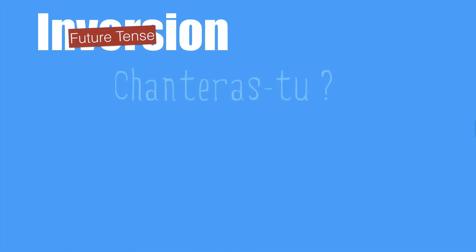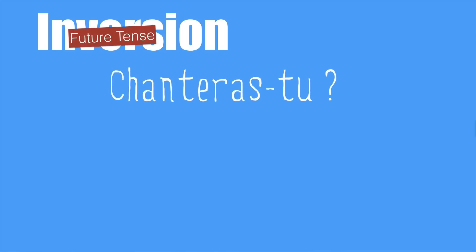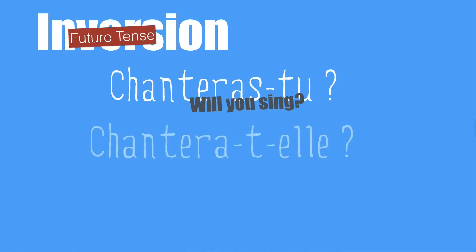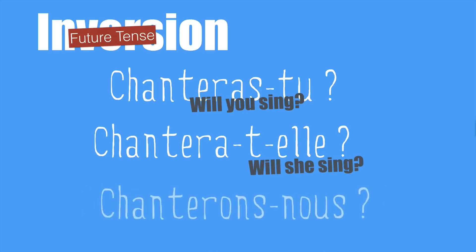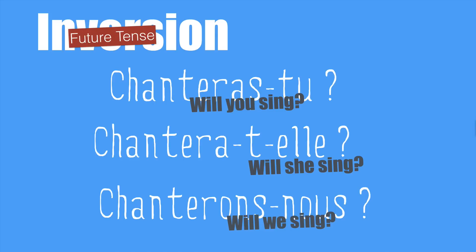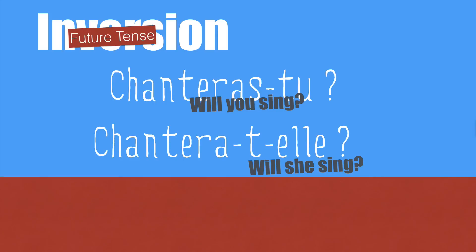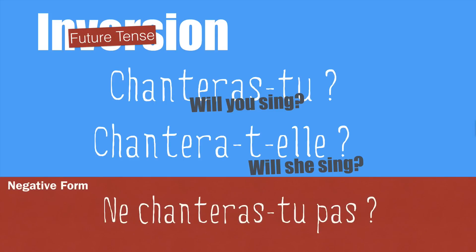Let's see now the future tense with the inversion. 'Chantera-tu?' — Will you sing? And our T again for 'Chantera-t-elle?' — Will she sing? And 'Chanterons-nous?' — Will we sing? The negative form is 'Ne chantera-tu pas?' — Won't you sing?